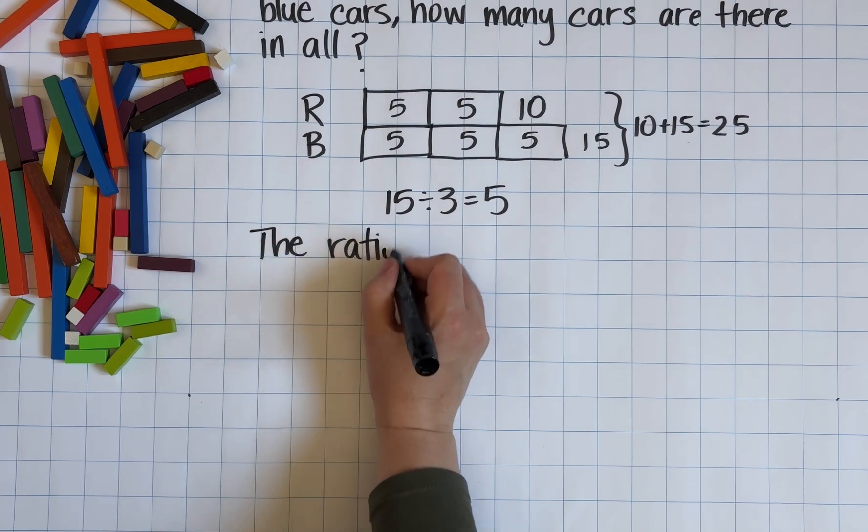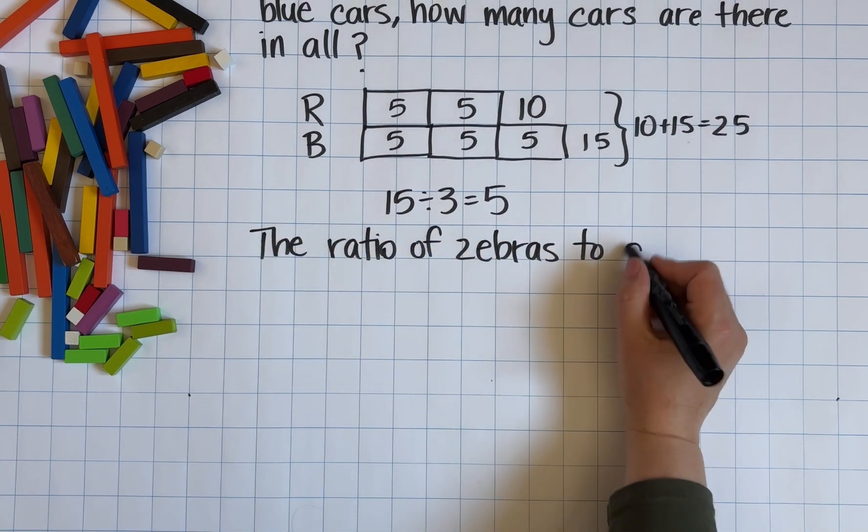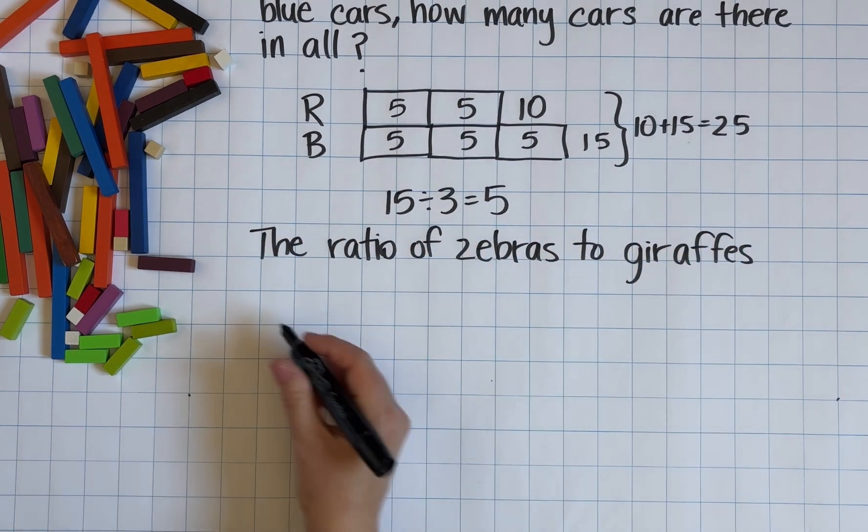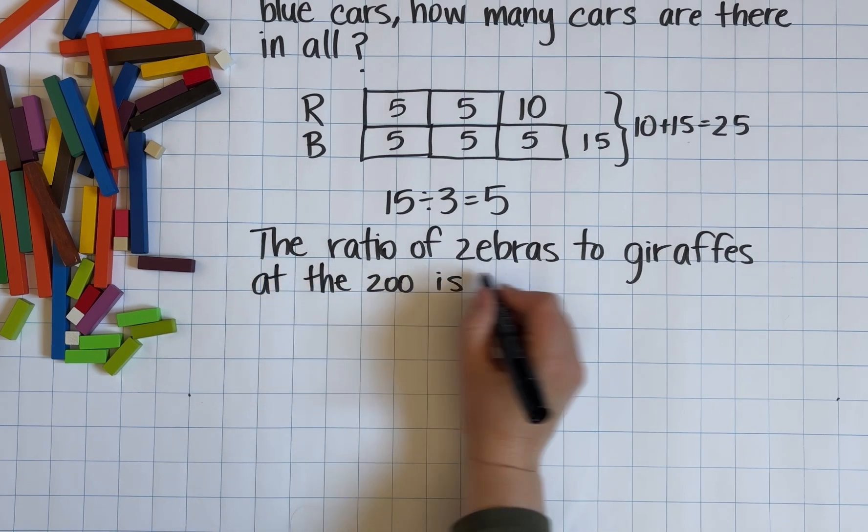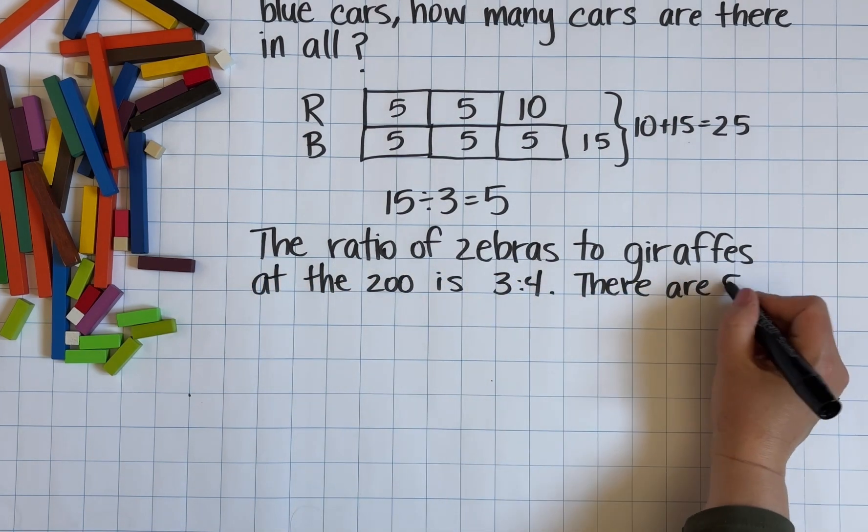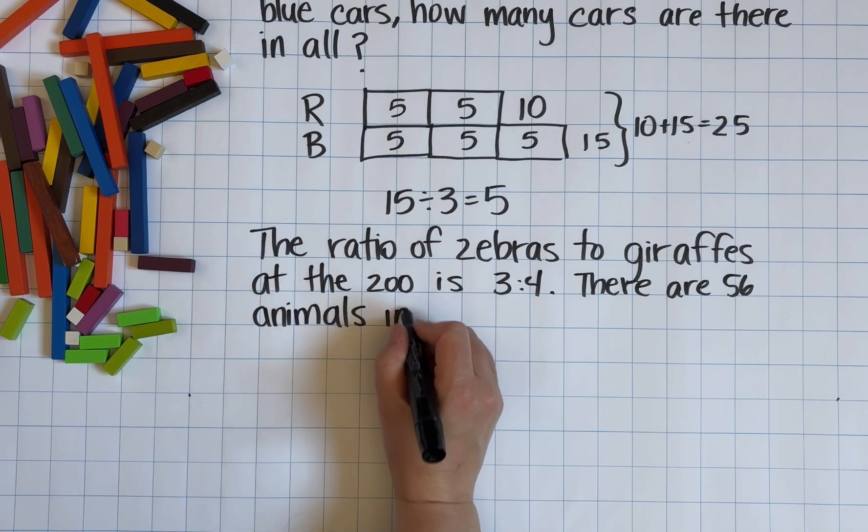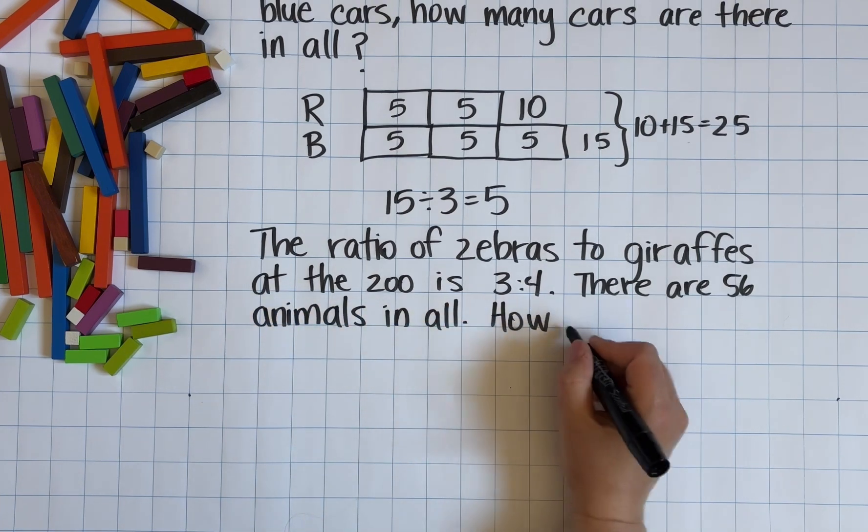So as we can see from the example that we just did, using models like this for a concept like ratio gives our kids the opportunity to develop that conceptual understanding. When they can actually visualize what it means, it's a lot easier to understand.